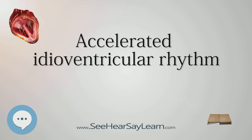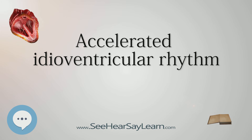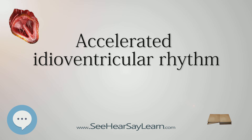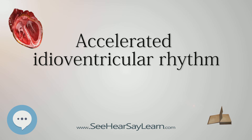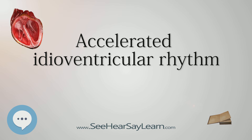AIVR appears similar to ventricular tachycardia with wide QRS complexes (QRS ≥ 0.12s) and a regular rhythm. It can most easily be distinguished from VT in that the rate is less than 120 and usually less than 100 BPM. There may or may not be AV dissociation depending on whether it is due to ventricular escape or AV block.